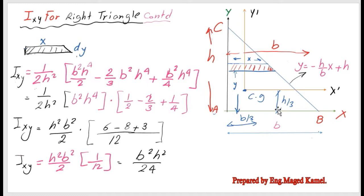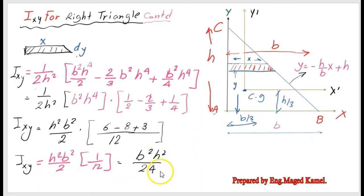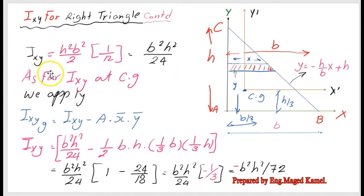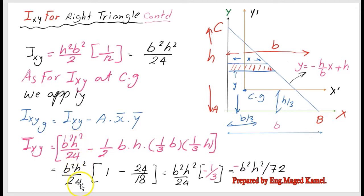We are going to use the parallel axis theorem: Ixy_CG = Ixy - A·x̄·ȳ. From the drawing, x̄ = b/3 and ȳ = h/3. We have Ixy = b²h²/24, area A = (1/2)bh, x̄ = b/3, and ȳ = h/3.